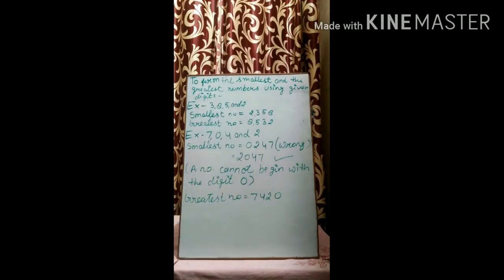And the greatest number? 7, 4, 2, 0. 7420.